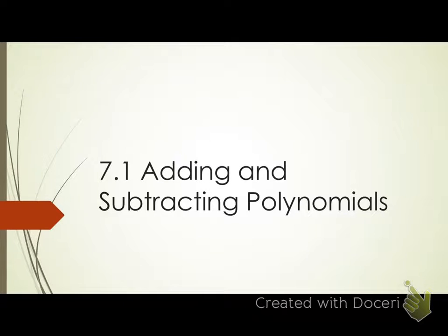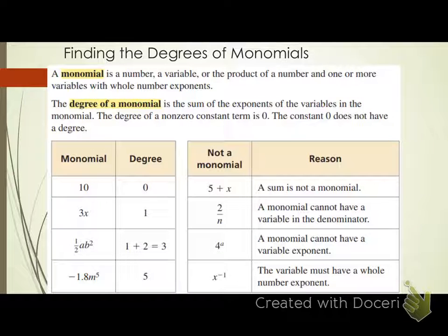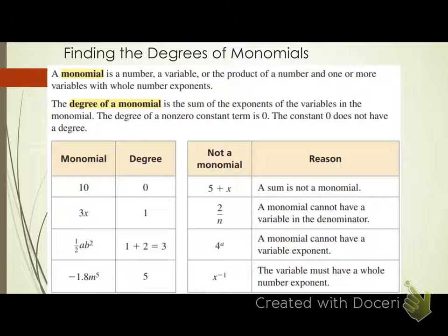Do we know what a polynomial is? Let's talk about what a monomial is first, and then we'll talk about polynomials. A monomial is a number, a variable, or the product of a number and one or more variables with whole number exponents. So a monomial can just be a number by itself, a variable by itself, or the product — multiplication — of a number and one or more variables. All the exponents of the variables need to be whole numbers.